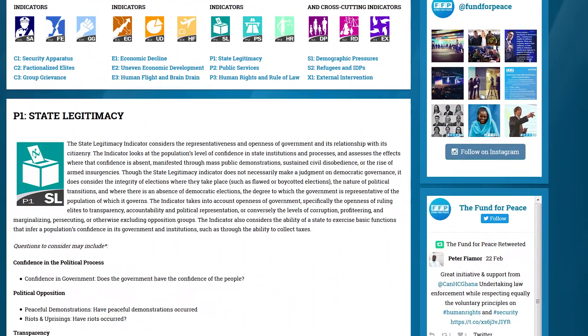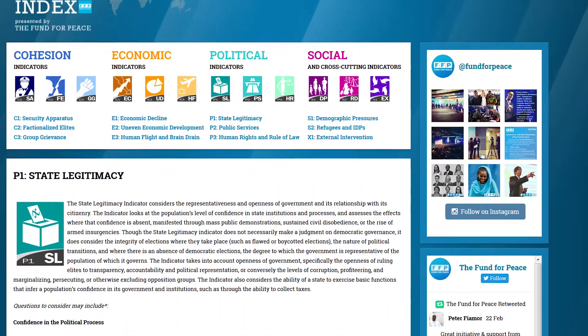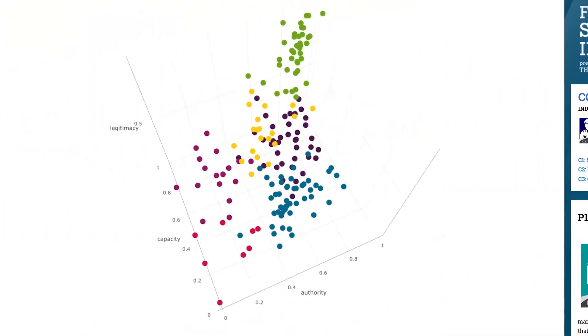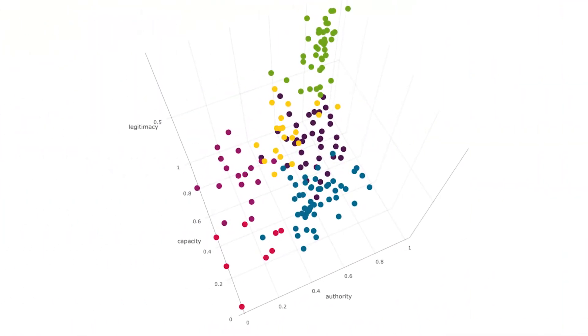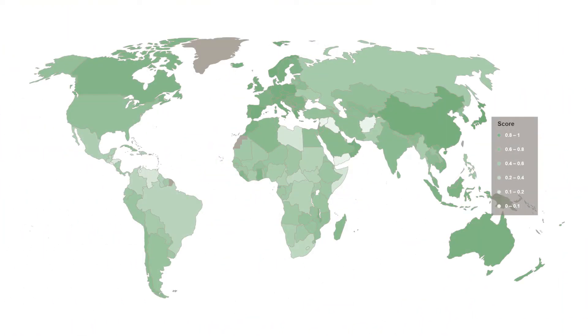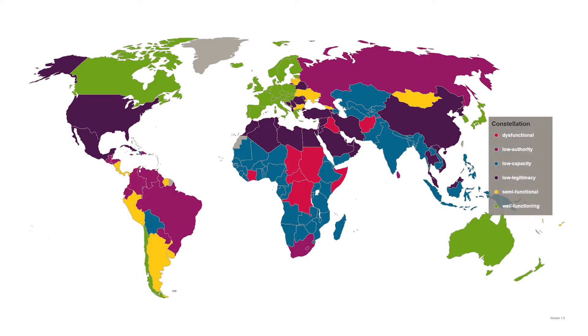While many political scientists use these dimensions to describe state fragility, the DIE researchers developed a methodology which identifies differences and similarities among states worldwide.